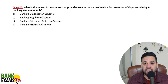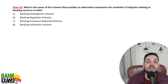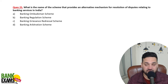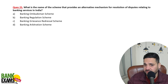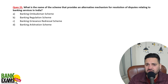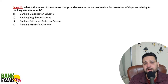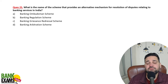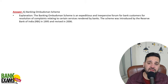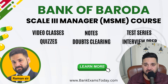What is the name of the scheme that provides an alternative mechanism for resolution of disputes relating to banking services in India? That is the Integrated Ombudsman Scheme, formerly known as the Banking Ombudsman Scheme. It is now called the Integrated Ombudsman Scheme.